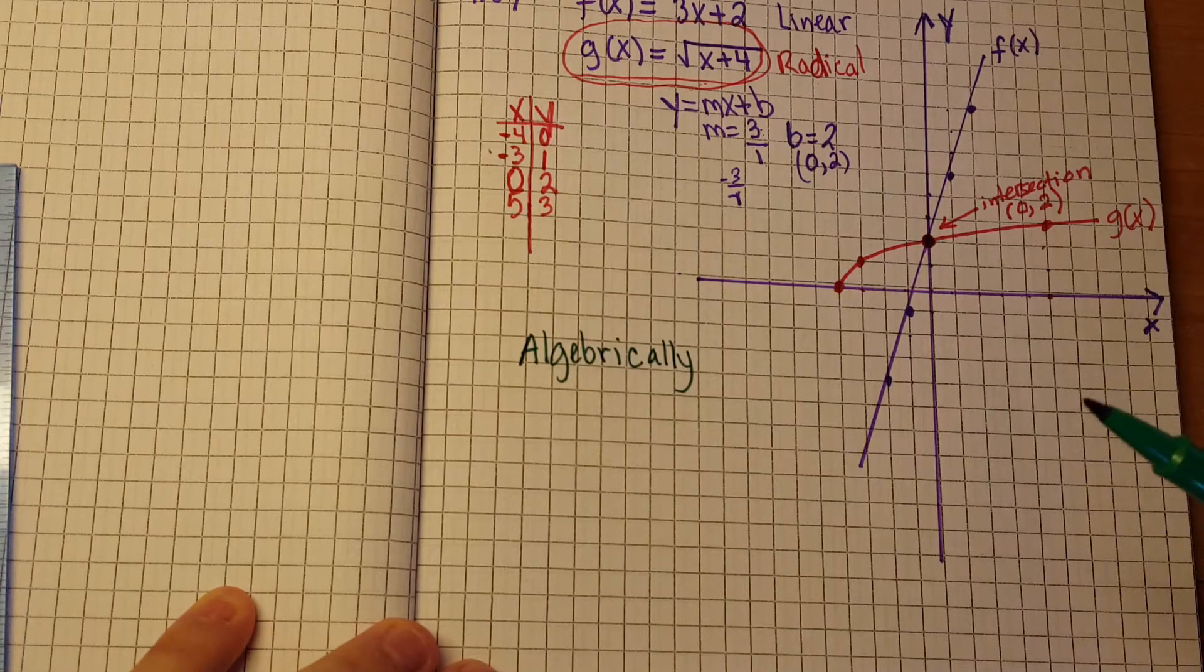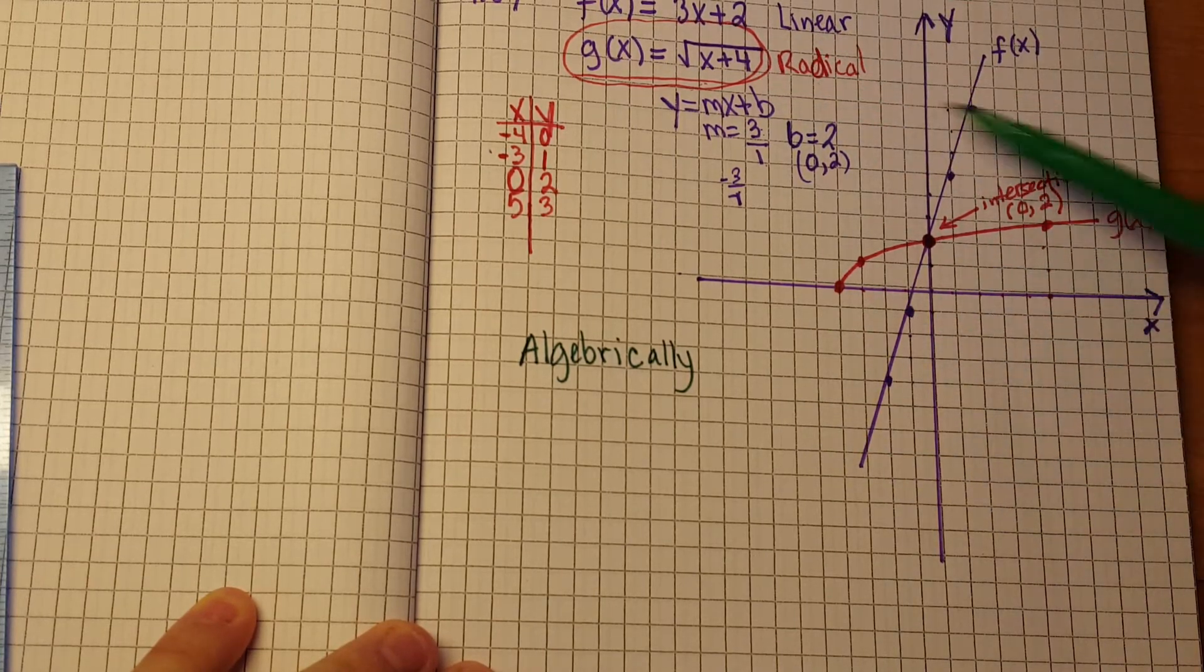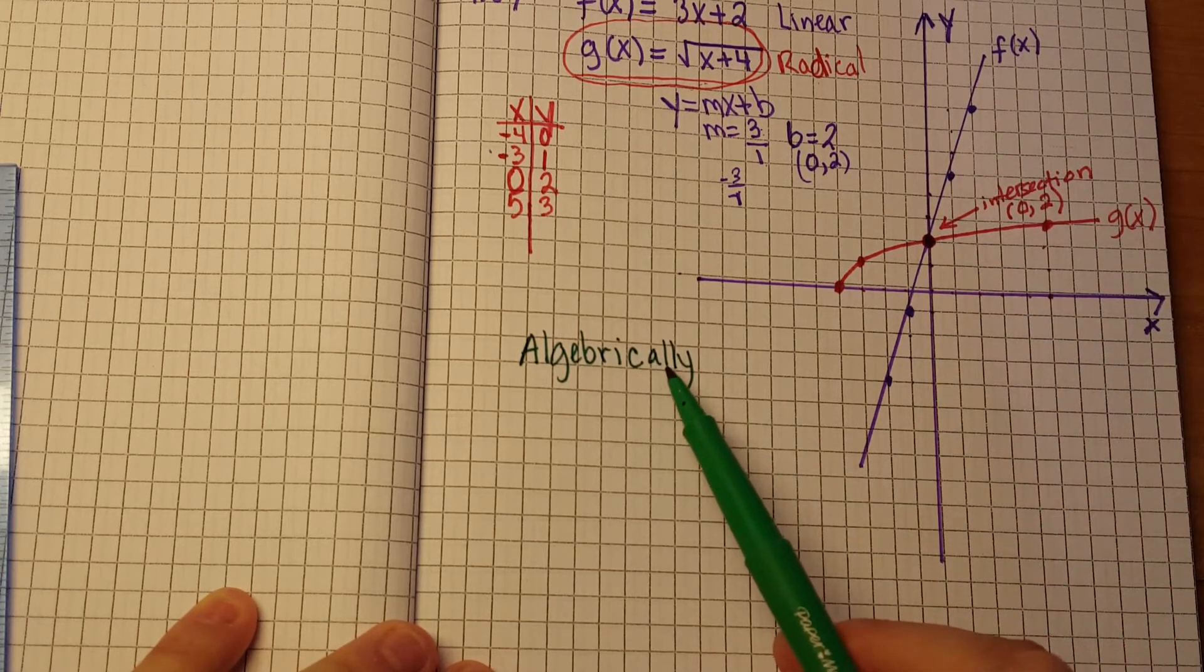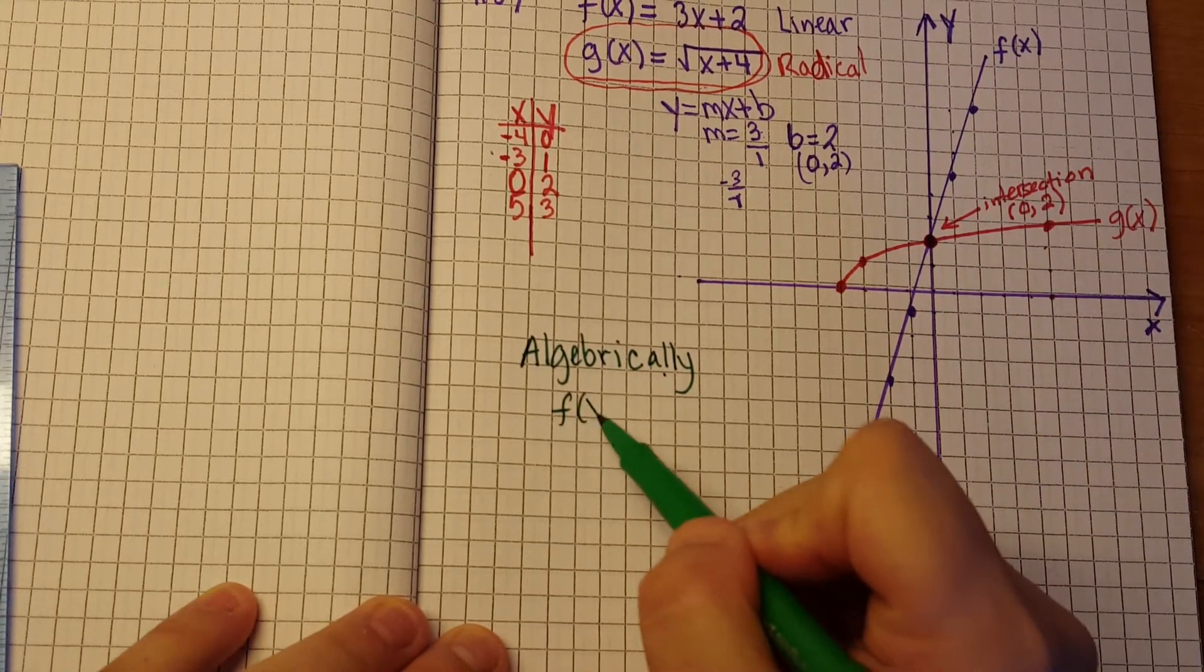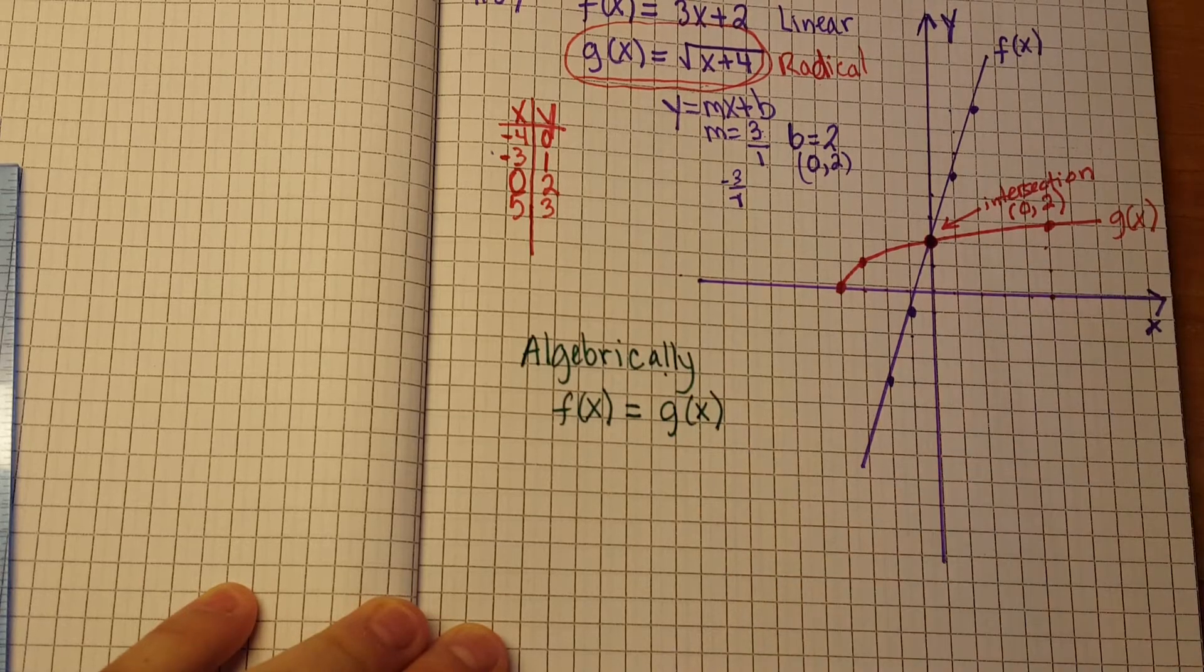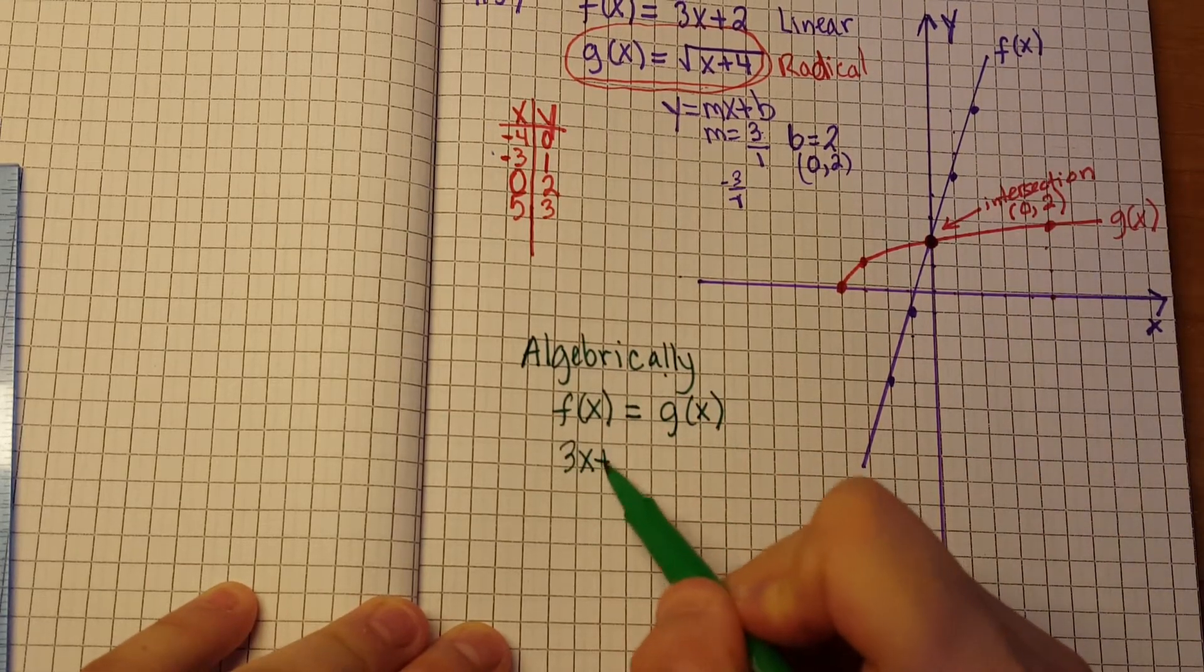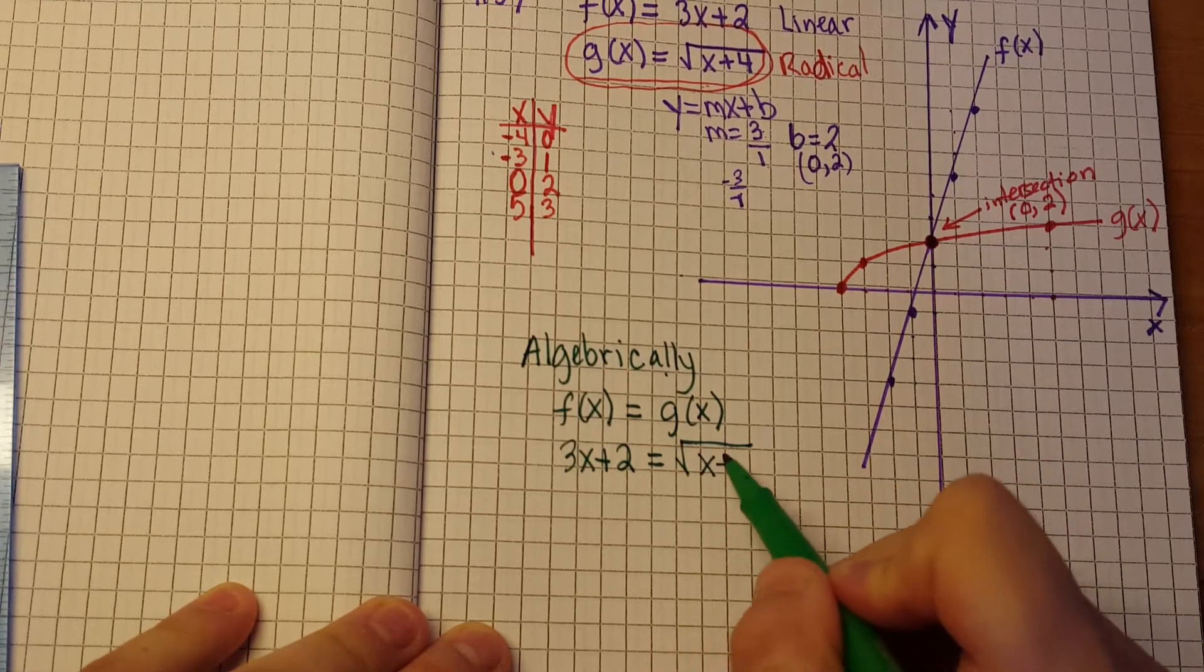All right, so now we're going to go ahead and solve our equation, we're going to solve our problem algebraically. So we did it graphically, so let's do it algebraically. Algebraically, what does that mean? That means to set your two equations equal to each other. So that means f of x is equal to g of x. Okay, well, what is f of x?